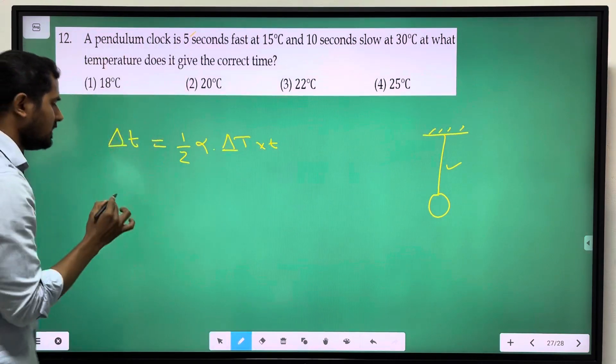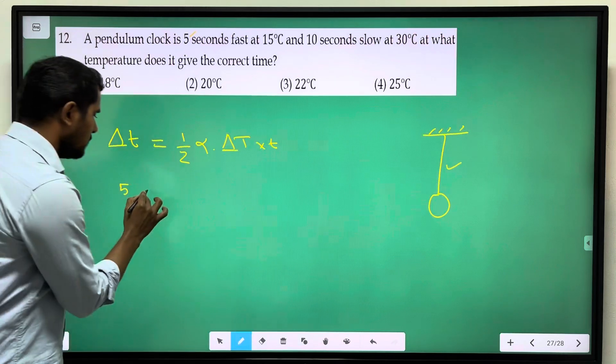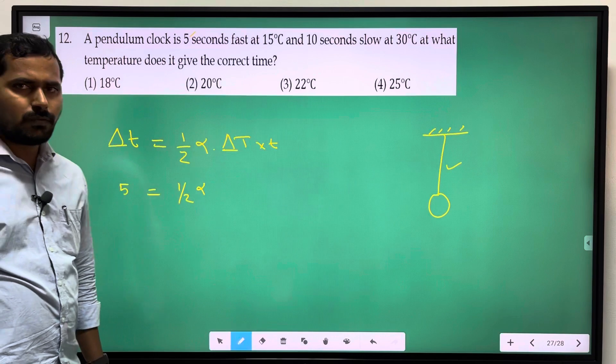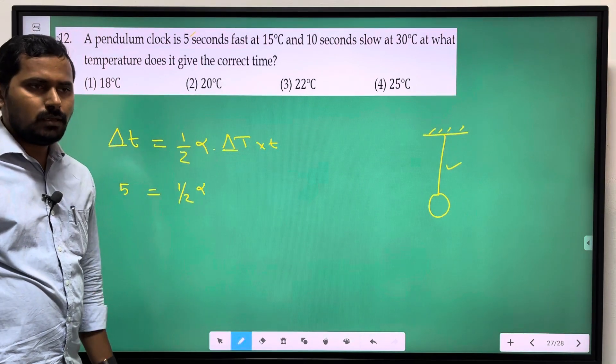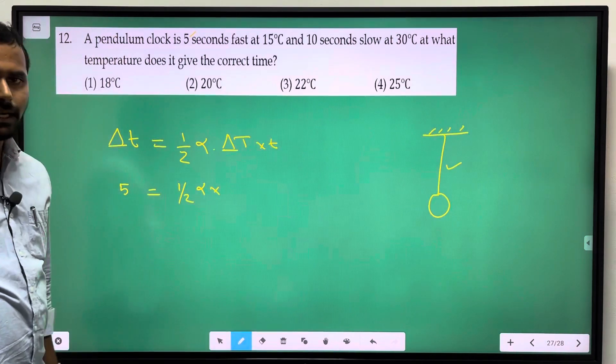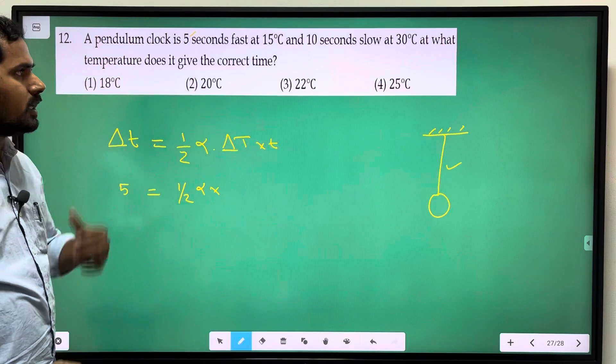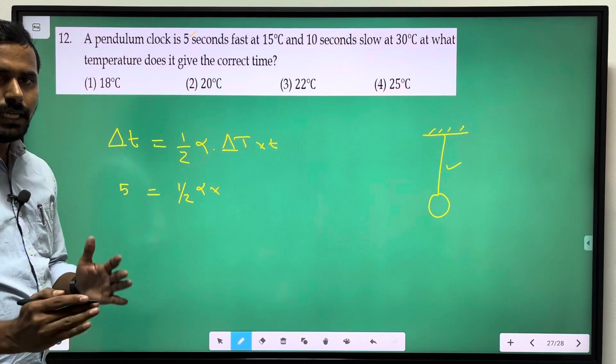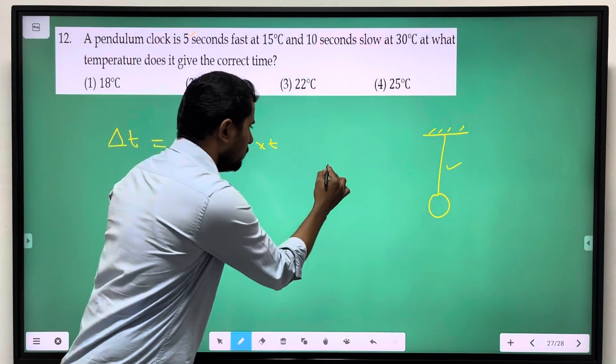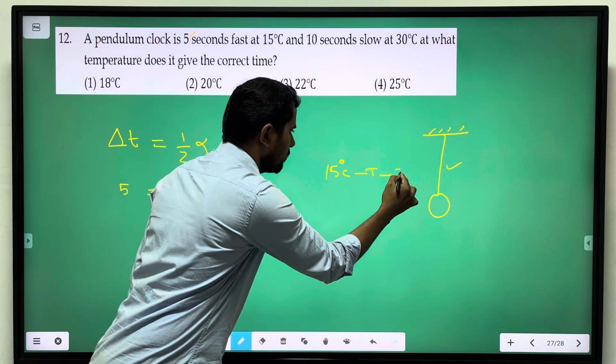Change in time 5 seconds fast is equal to 1 by 2 alpha, coefficient of linear expansion value, into change in temperature. Change in temperature - 15 degrees Celsius lower value, 30 degrees Celsius, in between in other particular temperature.